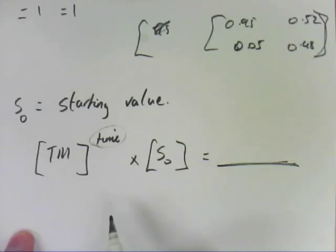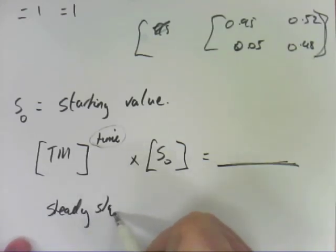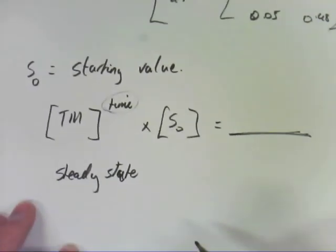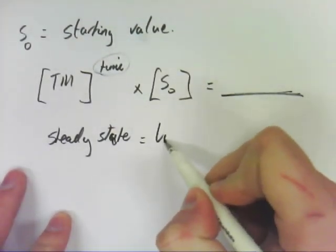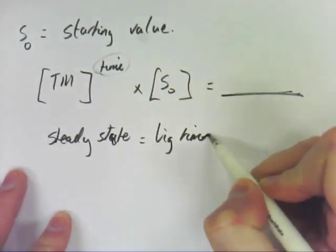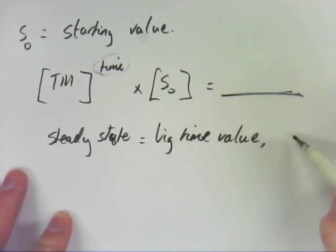So what you then do is you can get into something called a steady state. To get there, you use a big time value, so something like 50.